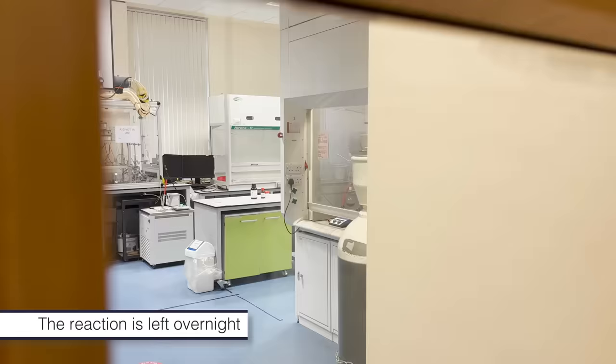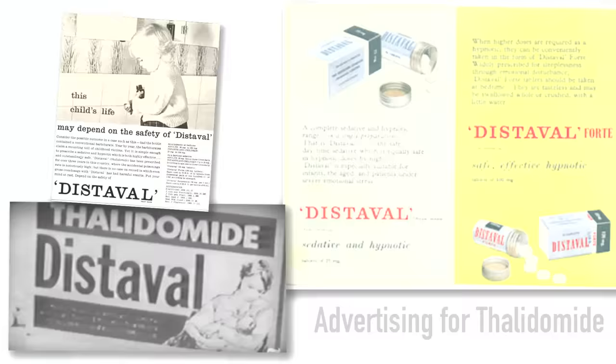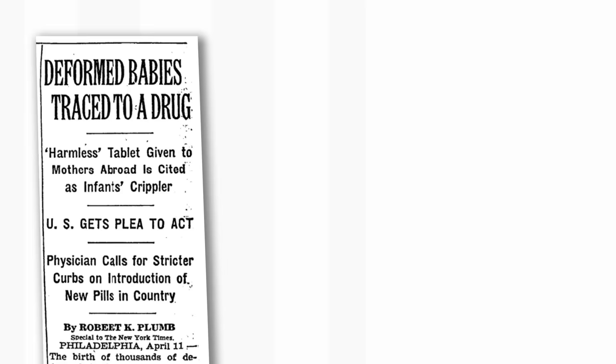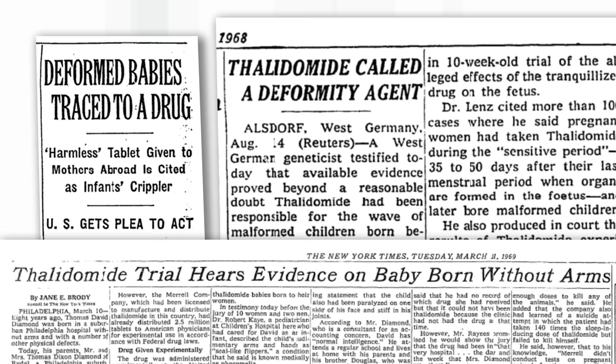Thalidomide has a rather tragic history. It was developed I think in the late 1950s as a treatment for morning sickness. This is the sickness that some pregnant women experience in the early stages of their pregnancy. It was found after lots of women had taken this drug, which was at the time marketed as being completely safe, that it caused very unpleasant effects or deformities on their babies. And in particular their limbs, their arms, their legs didn't develop properly. And it took years for this scandal to be unraveled.